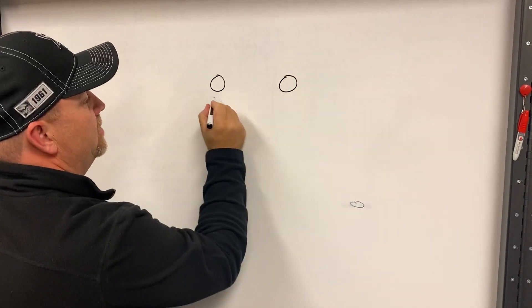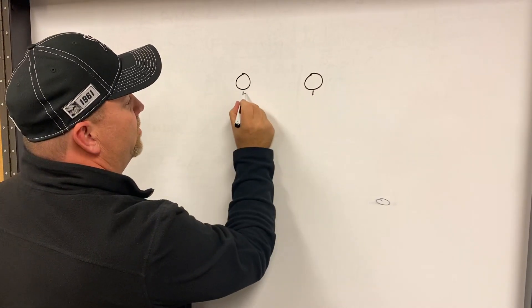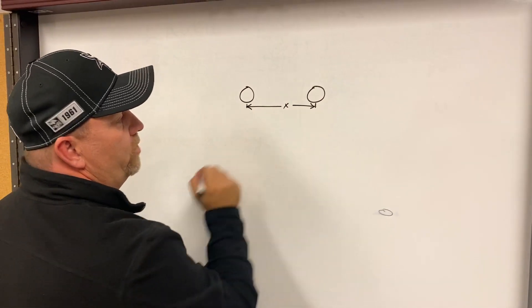So on a single axle truck, obviously you go from the center of the steer axle to the center of the drive axle. That's your wheelbase.